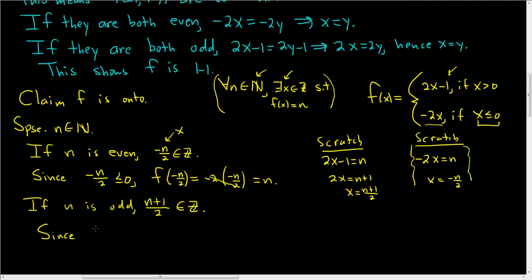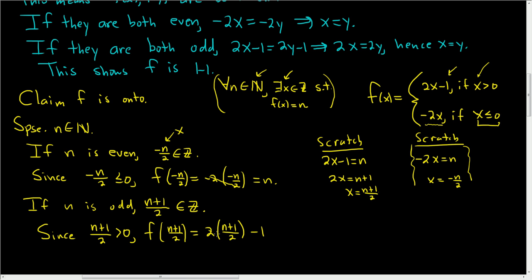Since (n plus 1) over 2 is positive — because the smallest n can be is 1, giving 2 over 2 equals 1 — we use the first piece. So f of (n plus 1) over 2 equals 2 times (n plus 1) over 2 minus 1. The 2's cancel, giving n plus 1 minus 1, which equals n. So in any case, we found an integer x such that f(x) equals n. This shows f is onto.